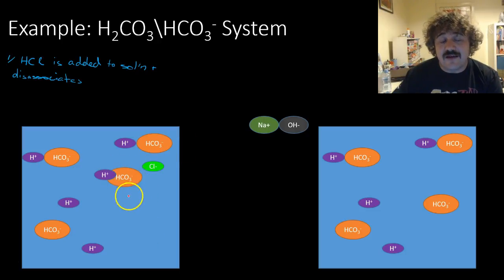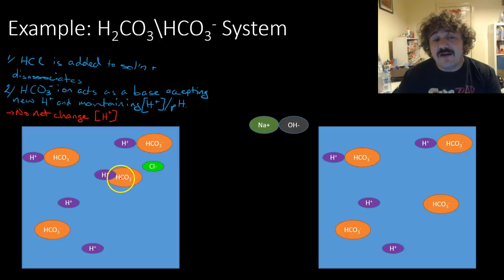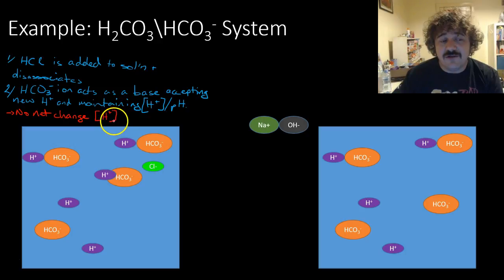What happens next is this hydrogen carbonate ion will bond up to that hydrogen ion, the proton that's been released from the hydrochloric acid. The hydrogen carbonate acts as a base, accepts that proton, and maintains the hydrogen ion concentration, which is a function of pH. You have no net change in the concentration of hydrogen ions. The chloride ion concentration is going up, but the hydrogen ion did not increase. Those went in and these hydrogen carbonates mopped them up.